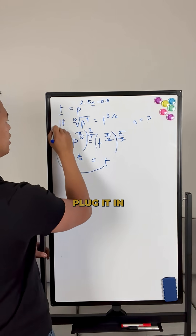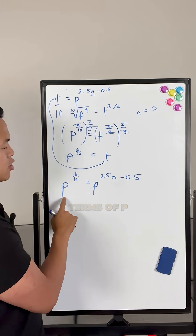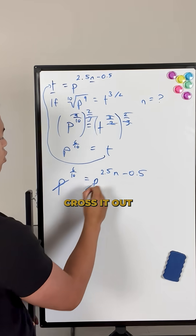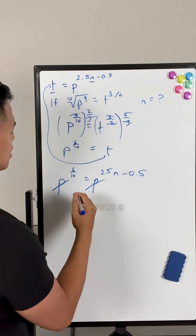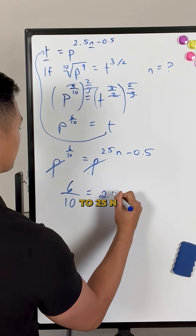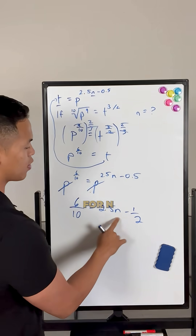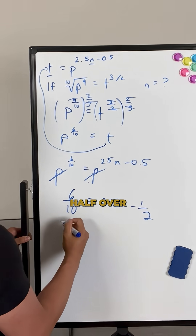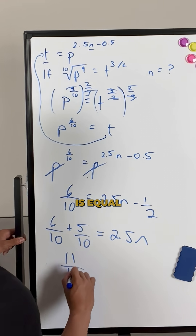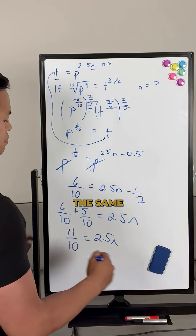Now take that expression for t and plug it into the first equation using substitution. Since everything is now in terms of p, the base is the same so we can cross it out. That gives us 6/10 equals 2.5n minus 0.5. Since 0.5 is one half, move it over: 6/10 plus 1/2 equals 11/10, so 11/10 equals 2.5n.